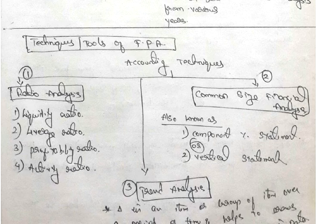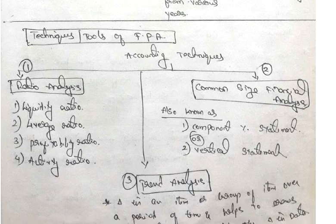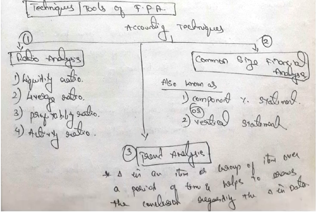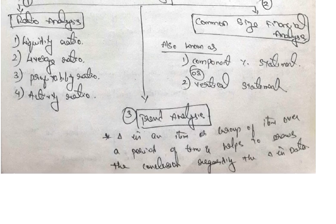Second is the common size financial analysis. This is also important. Also known as component percentage statement or vertical statement. Trend analysis is change in an item or group of items over a period of time and helps to draw the conclusion regarding the change in data.